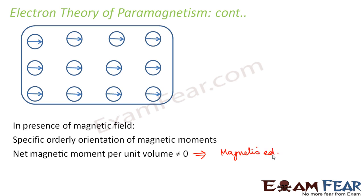Now in the case of paramagnetism, what happens if you heat this object? As soon as we start heating the object, the atoms will start moving randomly again, so the specific orientation will break down and disorientation will occur again. As a result, the substance will get demagnetized. So if you heat a paramagnetic substance, disorientation occurs, random movement starts, and magnetization is lost.